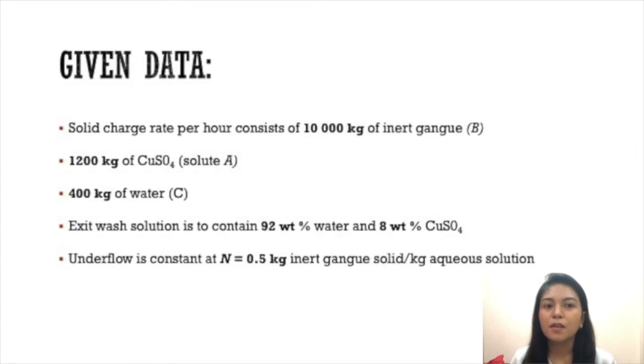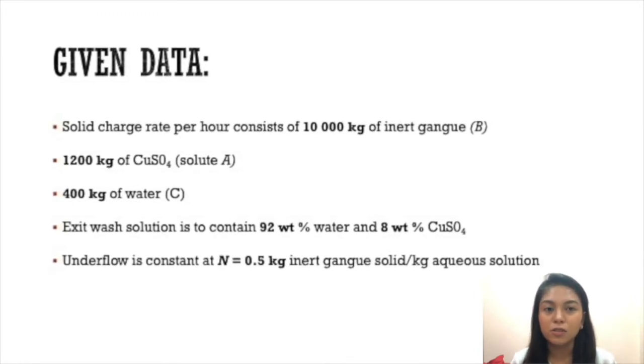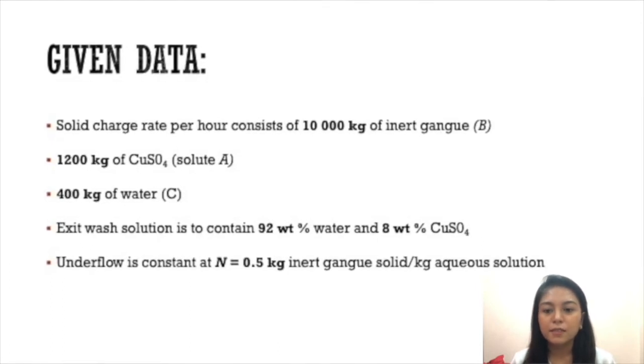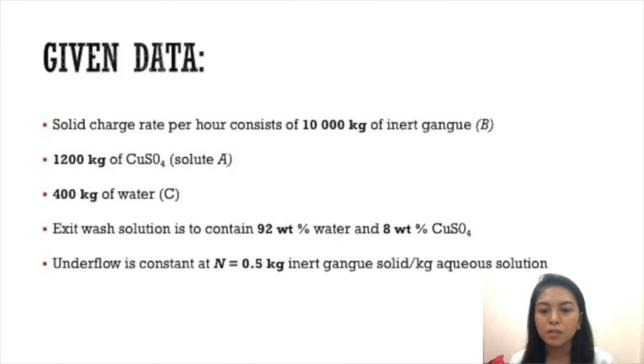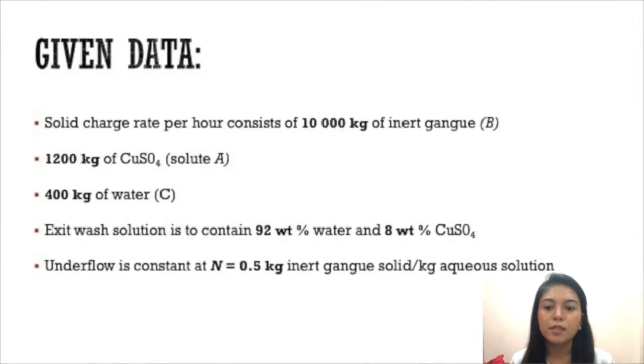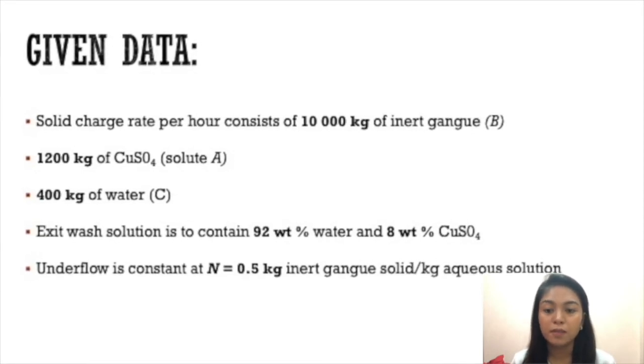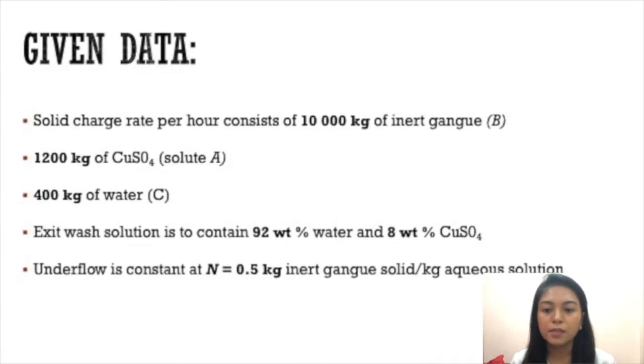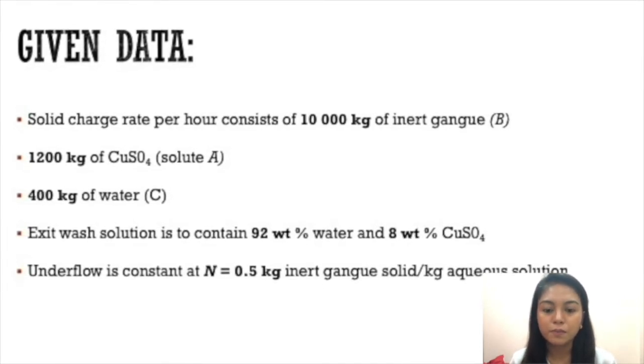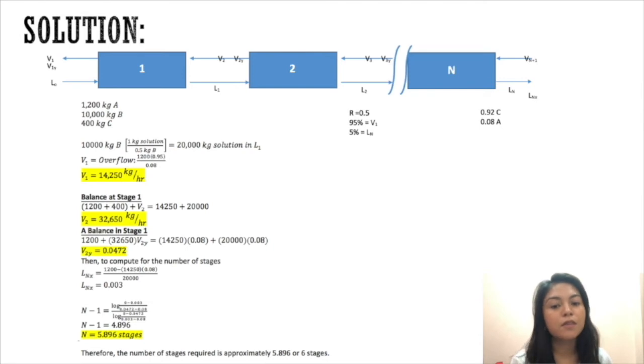After reading the problem, it's important that you write down the given data so you won't be lost: 10,000 kg inert gang, 1,200 kg copper sulfate, 400 kg water; exit wash solution 92 and 8 weight percent of water and copper sulfate respectively; underflow constant at 0.5 kilograms of inert gang solid per kilogram aqueous solution. To solve the problem, it's easier if you draw the process itself and label them according to the given data.